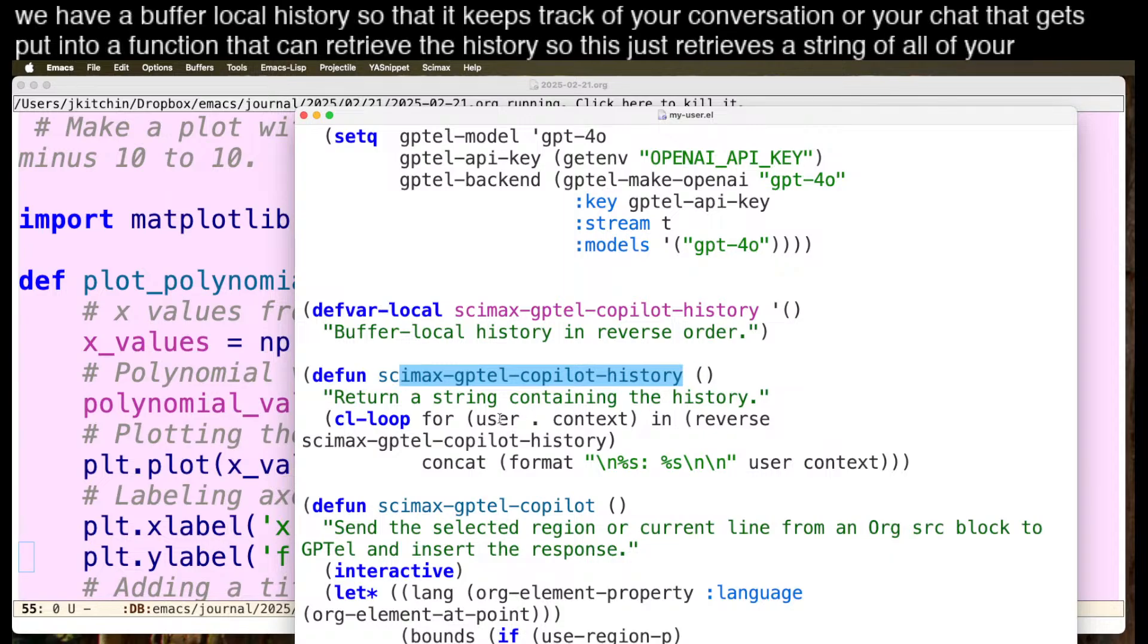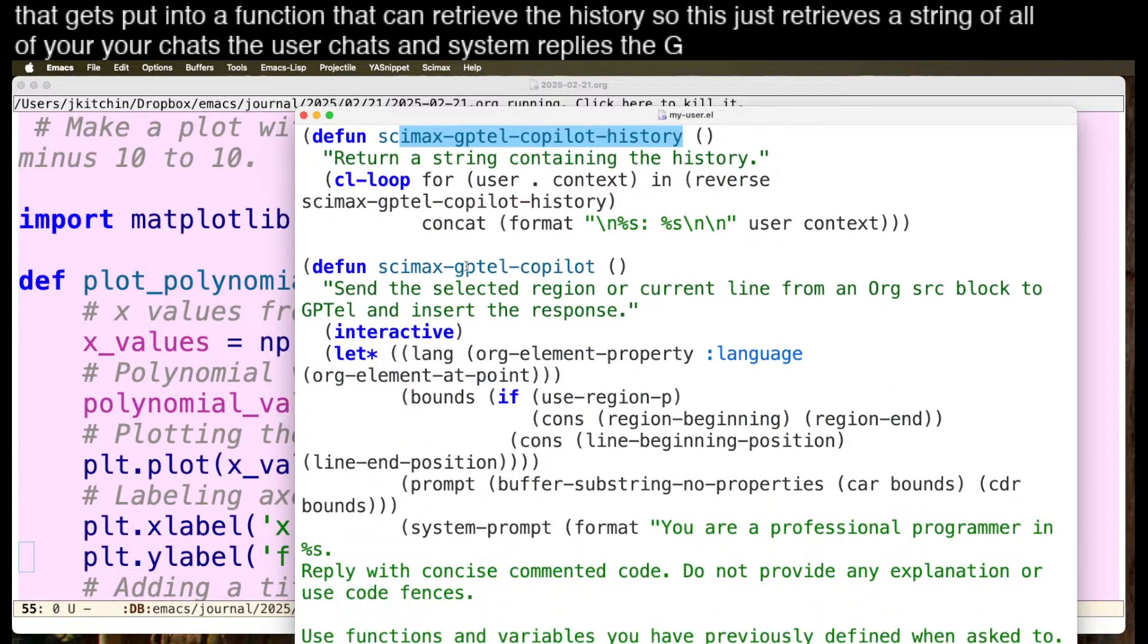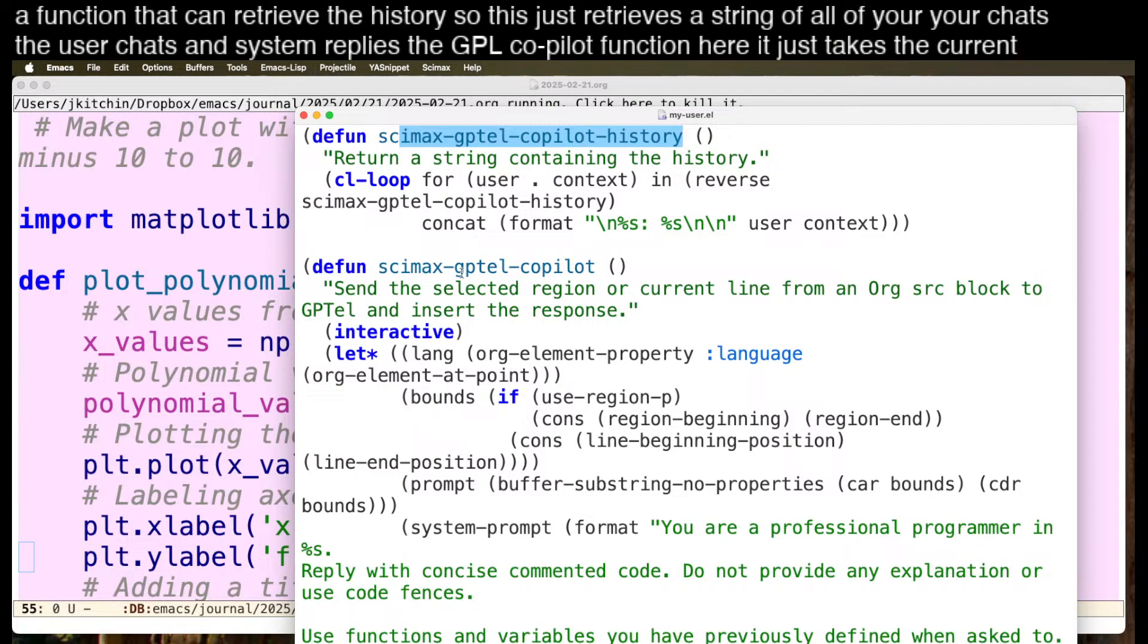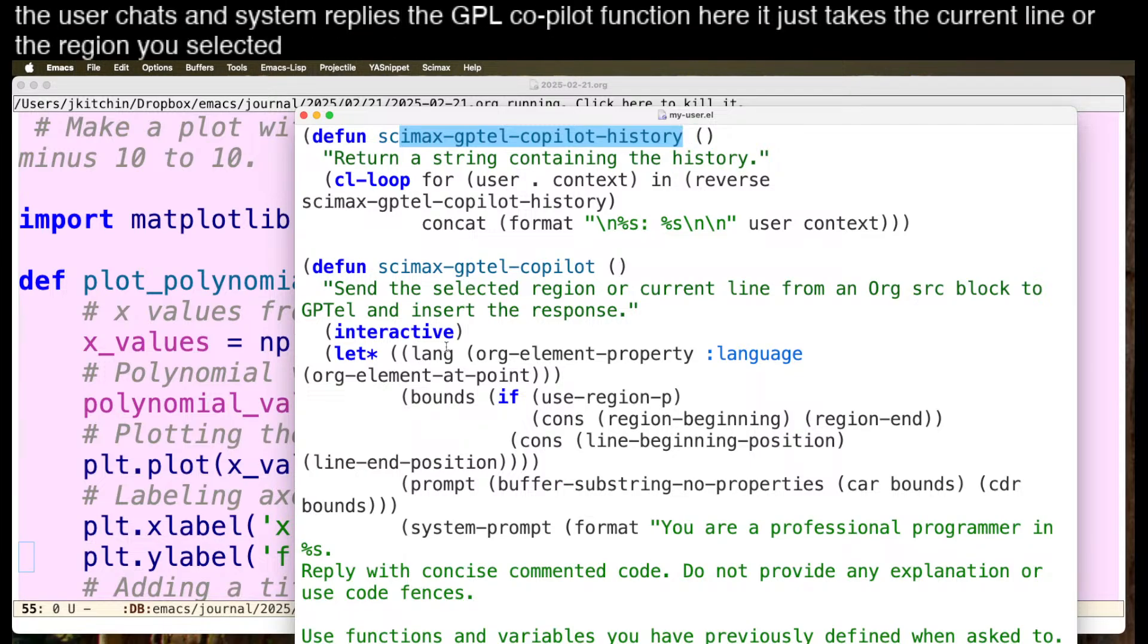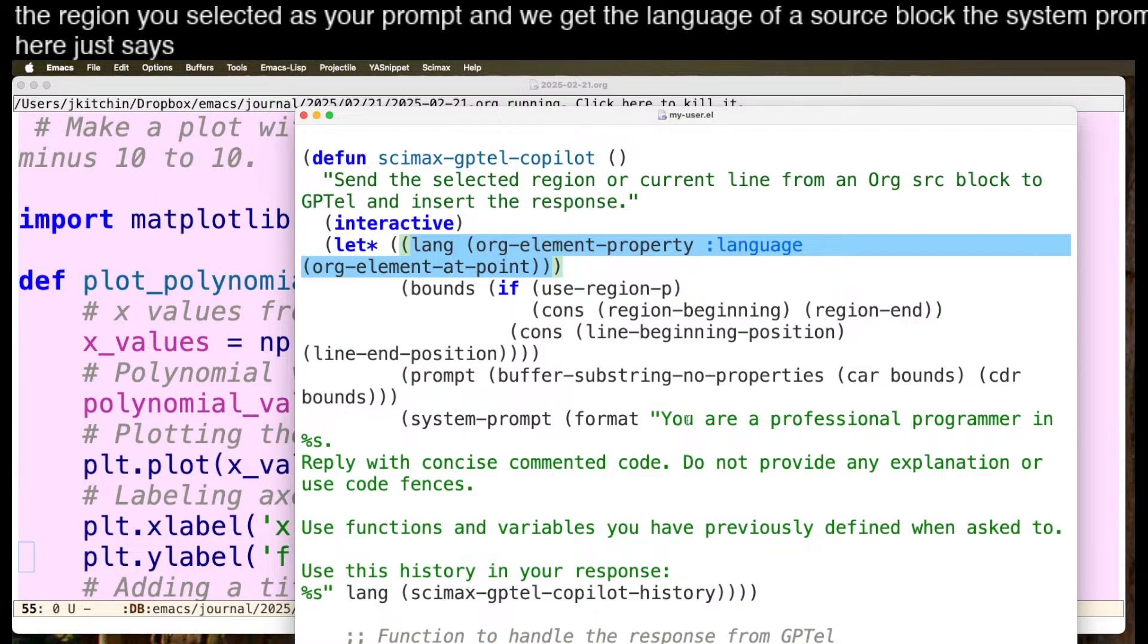That gets put into a function that can retrieve the history. So this just retrieves a string of all of your chats, the user chats and system replies. The GPTEL copilot function here, it just takes the current line or the region you selected as your prompt, and we get the language of a source block.